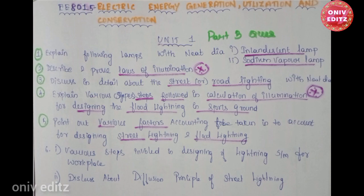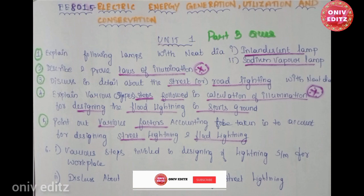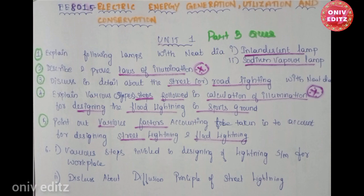Third question: discuss in detail about street or flood lighting with a neat diagram. Fourth question: explain the various steps followed in calculation of illumination for designing the flood lighting in a sports ground. The next question: explain the various factors for designing street lighting and flood lighting.